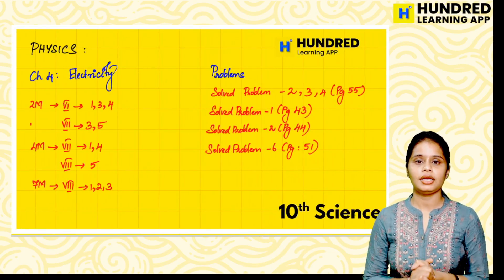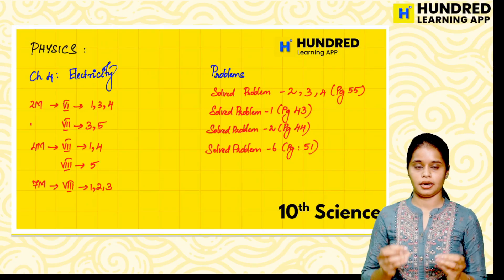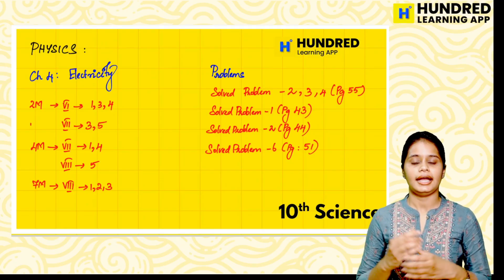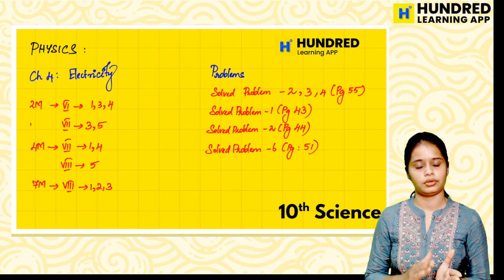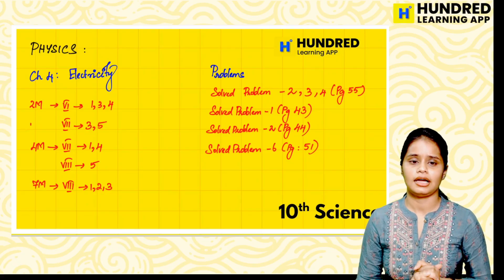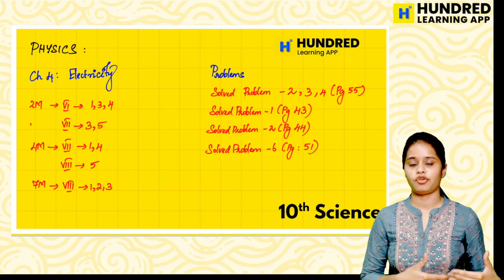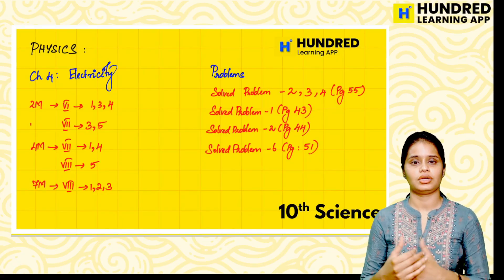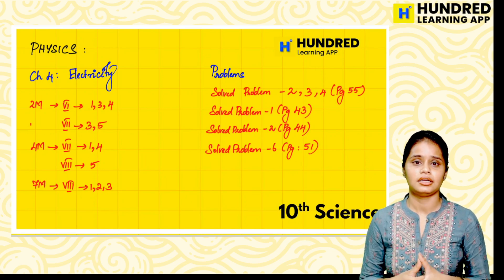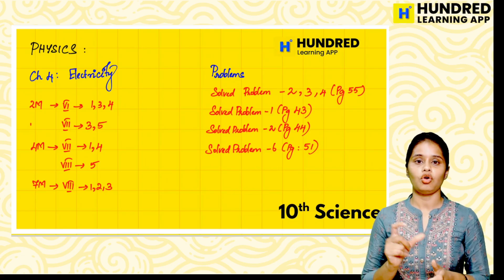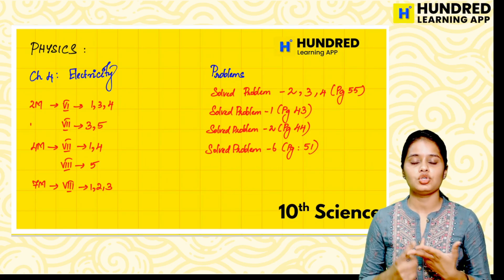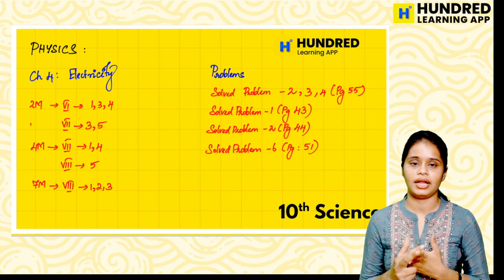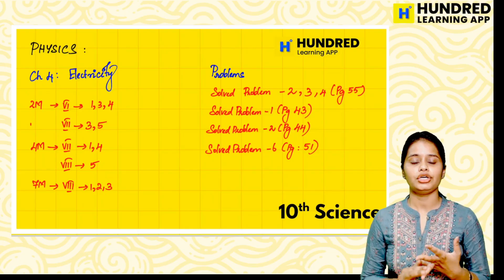And Chapter 4, it is a very important chapter - the electricity chapter. And in this chapter you will see a compulsory numerical. Expect 2 mark, 4 mark questions. The role of domestic circuits, and the merits of LED - there are subdivisions here. And the unit of electric current, what is electric current, what measurement, what device used.